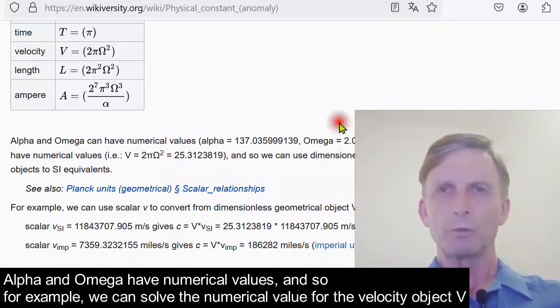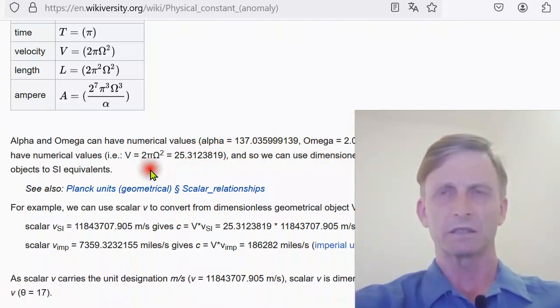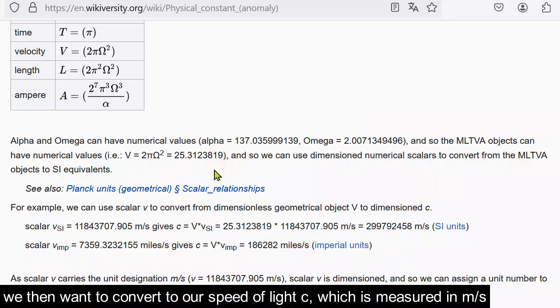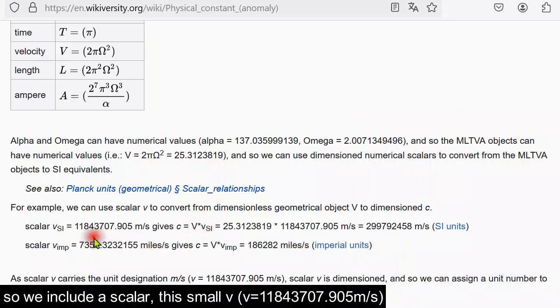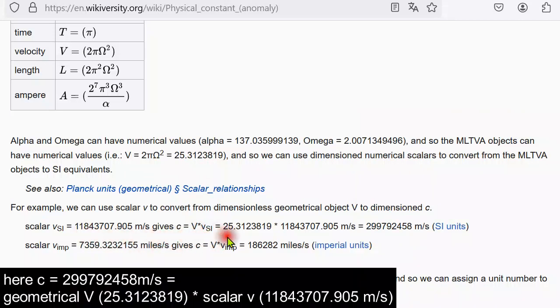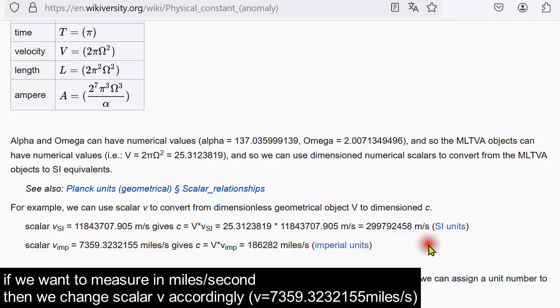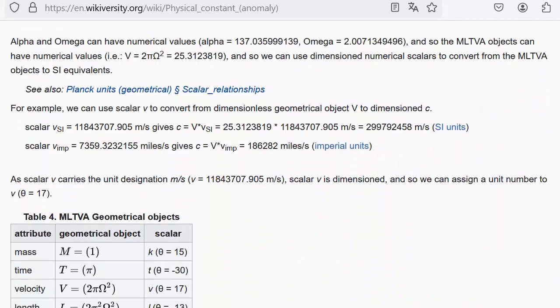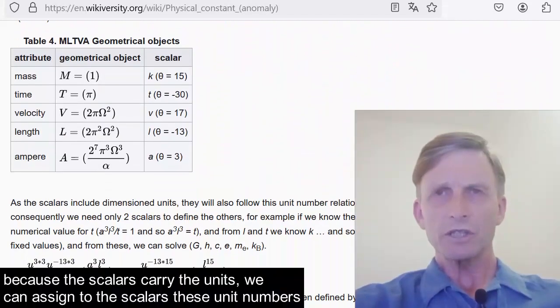Alpha and omega have numerical values, and so, for example, we can solve the numerical value for the velocity object V. We then want to convert to our speed of light c, which is measured in meters per second, so we include a scalar. This small v here: c equals geometrical V times scalar v. If we want to measure in miles per second, then we change scalar v accordingly. If we meet aliens, then they will have a different v depending on their unit system.